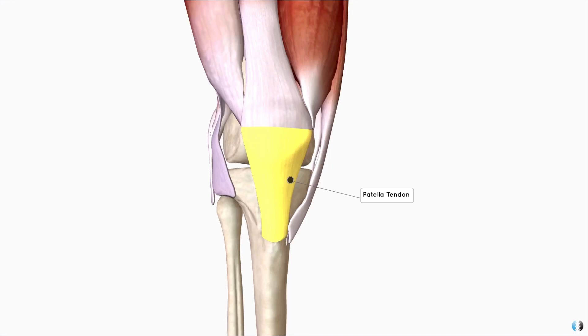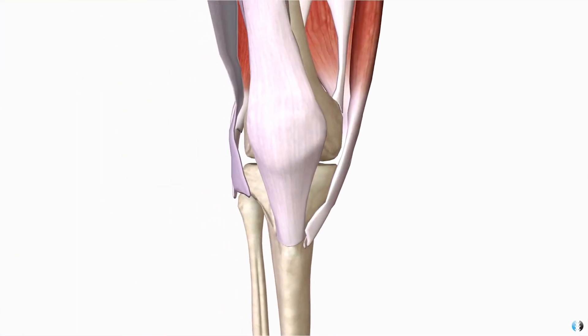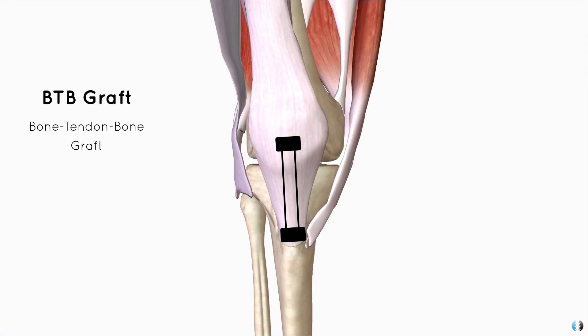So the patellar tendon can be found on the anterior knee, running from the patella to the tibial tuberosity. For this graft, the surgeon may take a small strip of tendon tissue from the mid third of the patellar tendon. Within that graft, they will also take a little bit of the patellar bone and a little bit of the tibial tuberosity bone at each end, which is why this graft is sometimes called a BTB graft or a bone tendon bone graft.